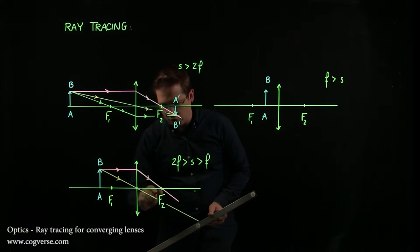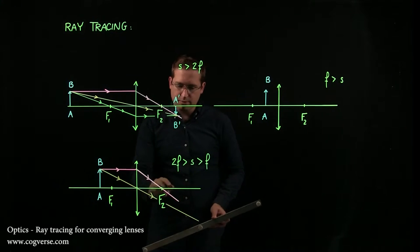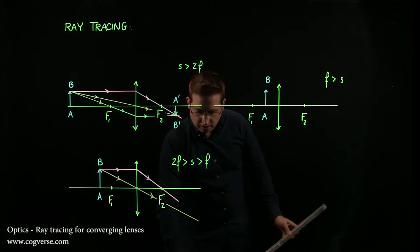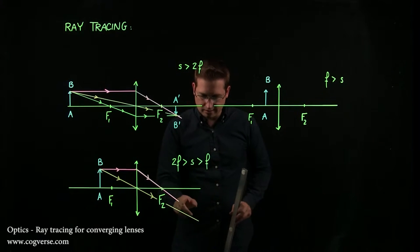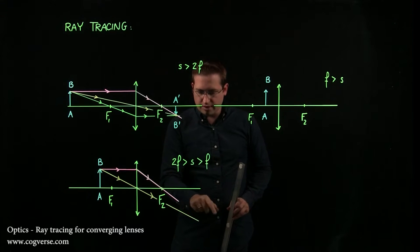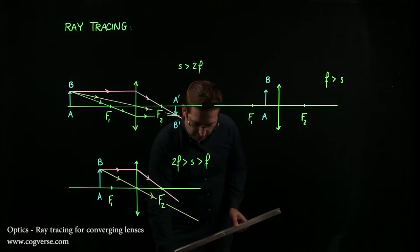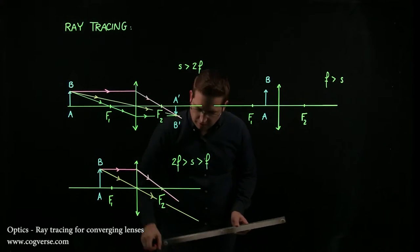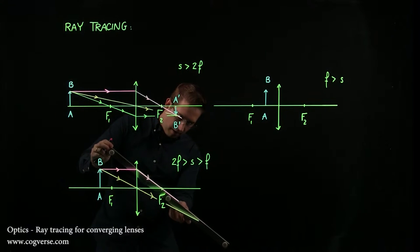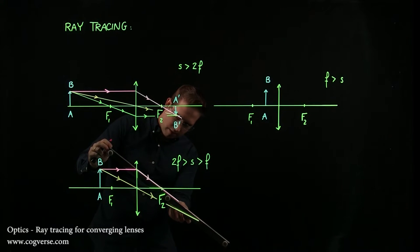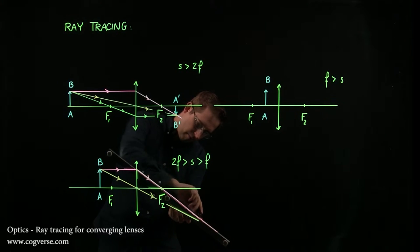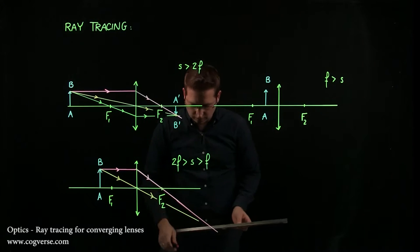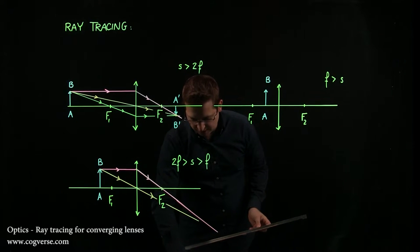And I really should have made my first ray a bit longer because I know that images form where emerging rays intersect or appear to intersect and it looks like they're going to intersect down here somewhere. So let me just do that right now and make my red ray, possibly even my second one too, a bit longer. And I'll have to adjust the second one as well.